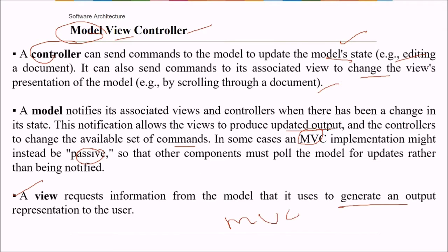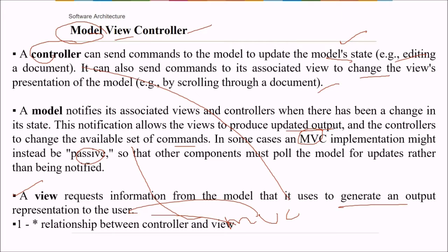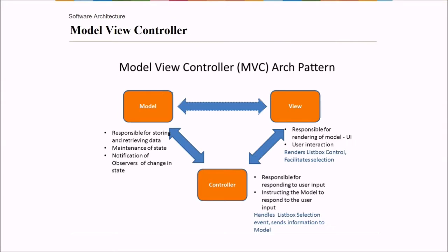So we have MVC, model, view, this is view, model view, controller. So we have one to many relationship with controller and view. So there can be various views, number of views and controller is one. This is the MVC architecture pattern.